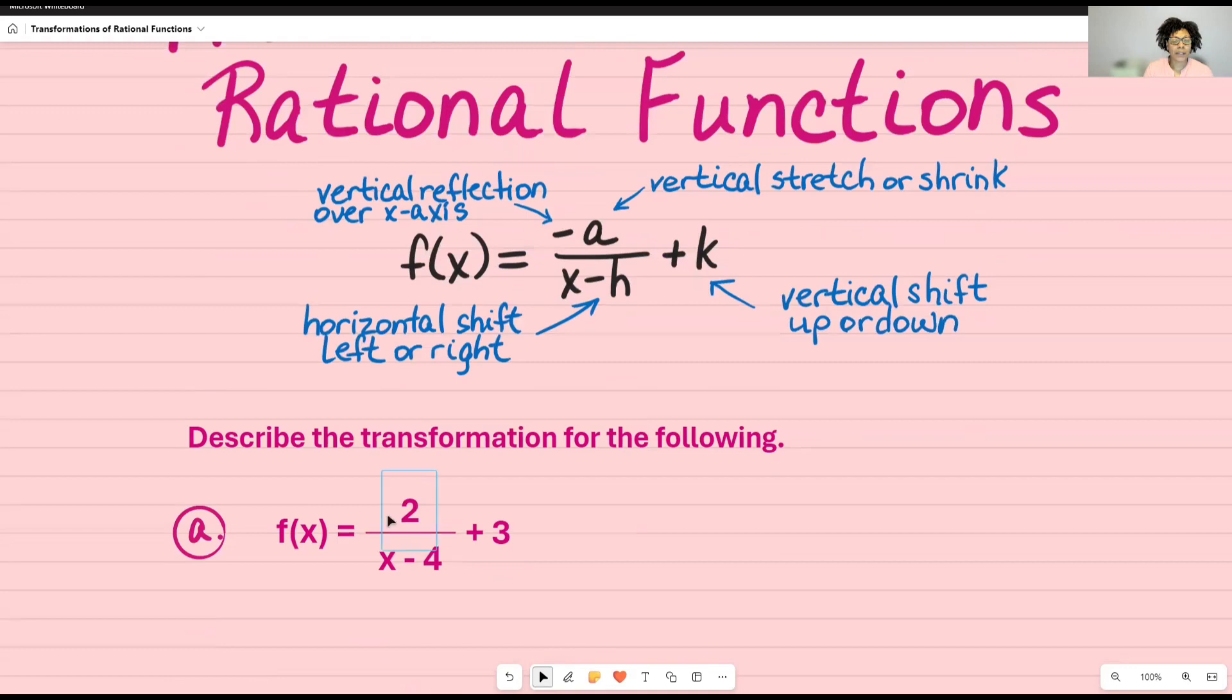And when I look at 2, that represents my a. So that tells me what's going to happen here. It's a vertical stretch. X minus 4, I just happened to actually use an example similar to that a few minutes ago. What would x have to be to make this equal zero? And then that's going to tell us whether or not we're going to go to the left or to the right. And then plus 3 tells us k, which is vertical shift up or down.